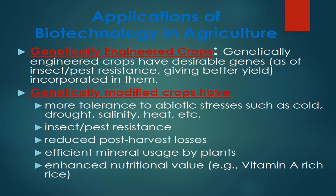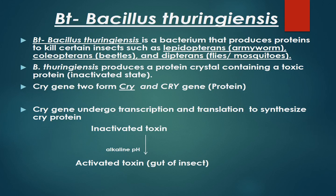Genetically modified crops help in enhancing nutritional value — for example, Vitamin A-rich rice, which we will see in the last slide. Now let us talk about the BT gene. BT stands for the bacterium Bacillus thuringiensis, which is a gram-positive spore-forming soil bacteria. This bacteria carries a gene called the BT gene.